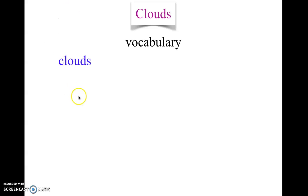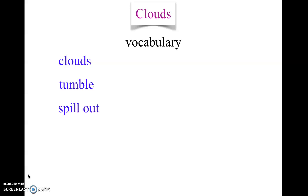This poem is called Clouds, and I wanted to look at some of the vocabulary. I've tried to separate the vocabulary into words that are helpful outside of this poem and words that you just need to know for this poem. On the left I'm going to have the vocabulary that is useful everywhere. The first word: clouds. Tumble. Spill out — notice this is a phrasal verb, a verb phrase with the verb and the preposition. Evoke.